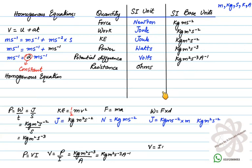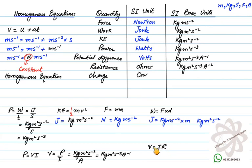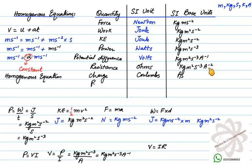The SI unit of resistance is ohm. Using R = V/I: V in SI base units is kg m²s⁻³ A⁻¹, divided by current in ampere, gives kg m²s⁻³ A⁻² as the SI base unit of resistance.